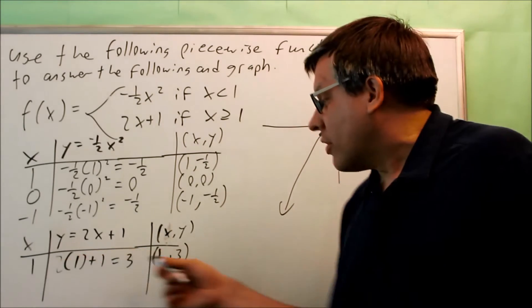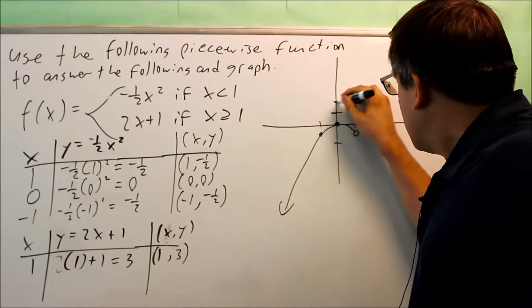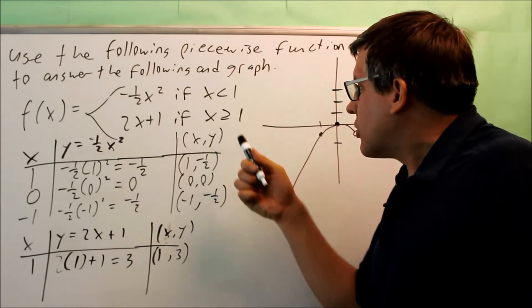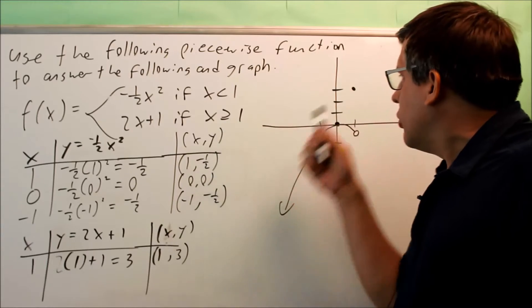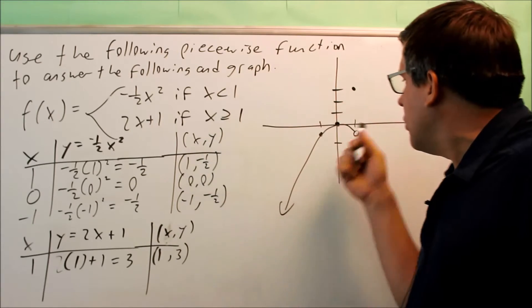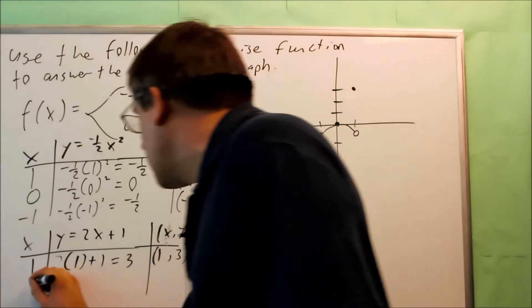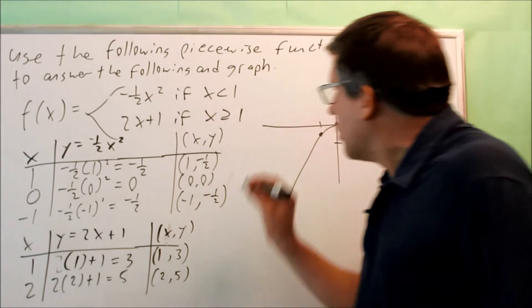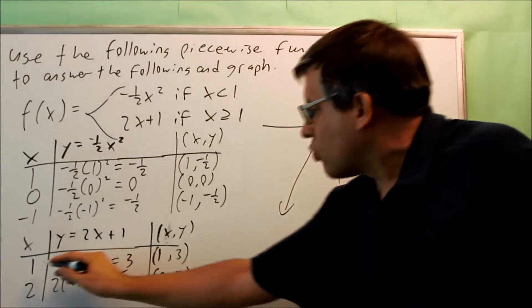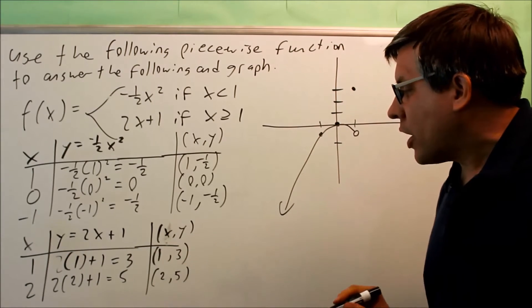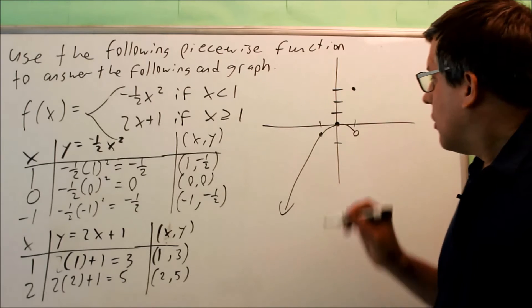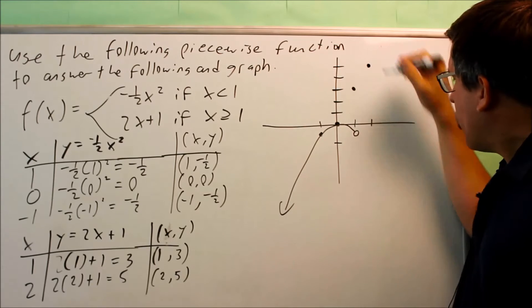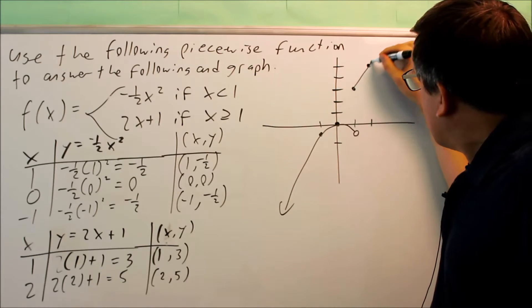1, 3 would be right here. That's going to be a closed circle because the 1 is included here. If it's included, it has the equal sign and you use a closed circle. If it's not included, you use an open circle. We've got to get one more point. Let's use 2. The next point I got by plugging that in was 2, 5. I'm going to go over 2 and up 5. My line is going to go out this direction.